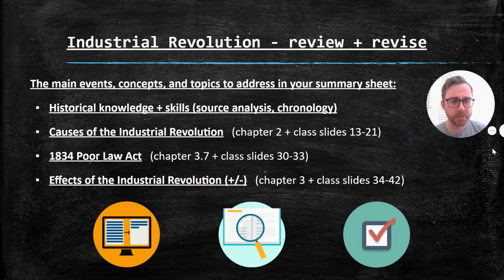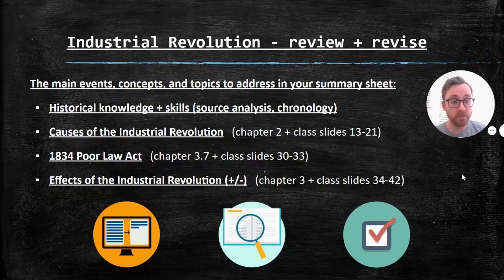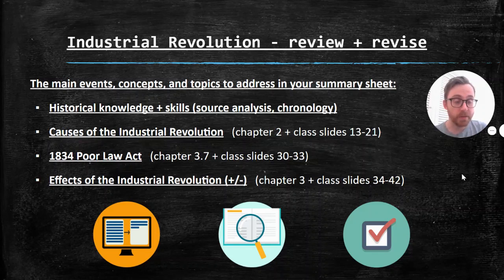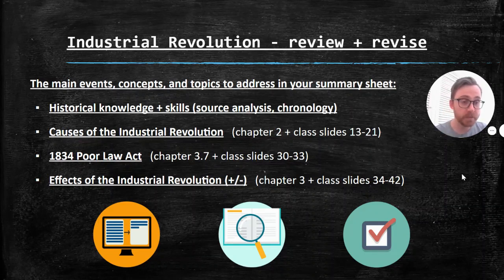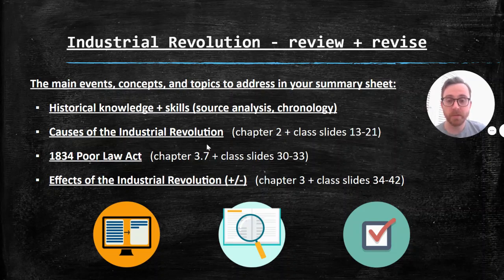And for each of these, I've tried to give you some advice on where to go to add to your summary sheet. So I've given you the textbook chapter where you can find that, chapter 2. And also the class slides in this presentation that we used for those lessons. The second main topic that you'll need to study is the 1834 Poor Law Act. So again, we did a source analysis assessment activity during week 3 or week 4. And you can find information about that in chapter 3.7 and the class slides.